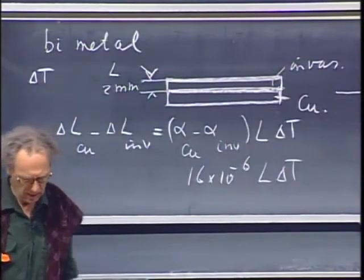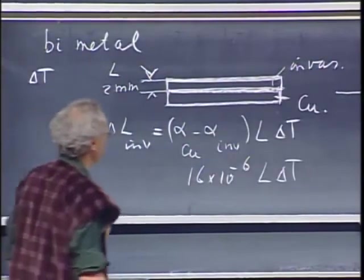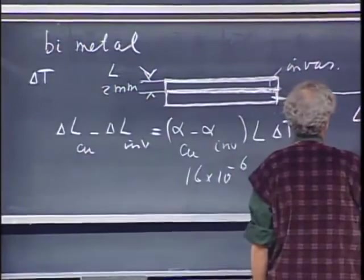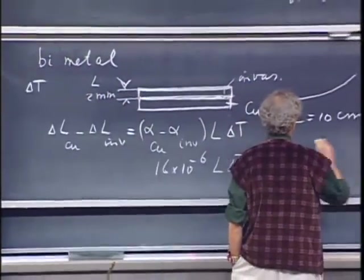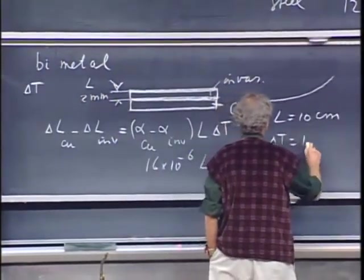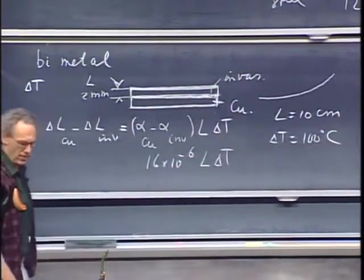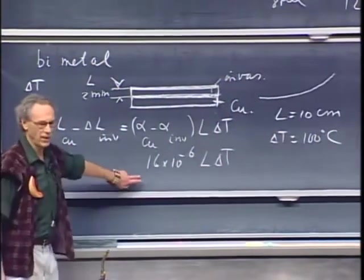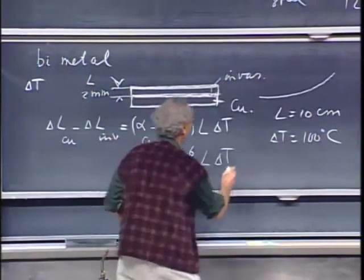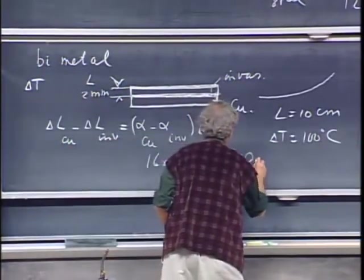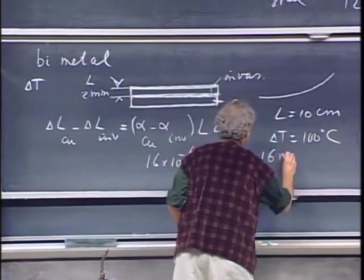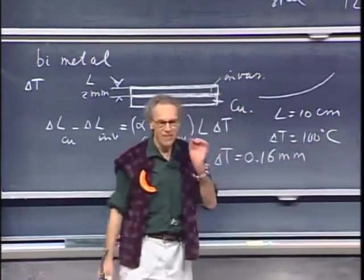So the difference is 17 minus 1, so that is 16 times 10 to the minus 6 times L times delta T. And if I take a length of 10 centimeters and I increase the temperature by 100 degrees centigrade, then this difference, which you can easily calculate, is 0.16 millimeters. 0.16 millimeter. Very little.